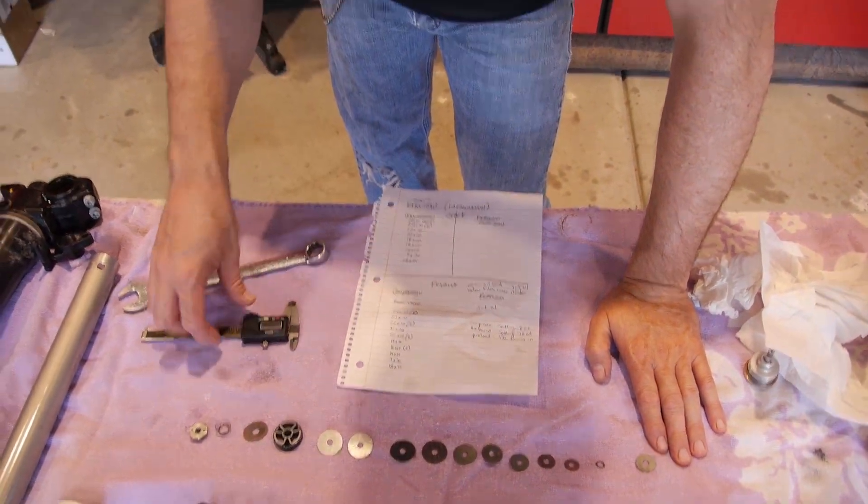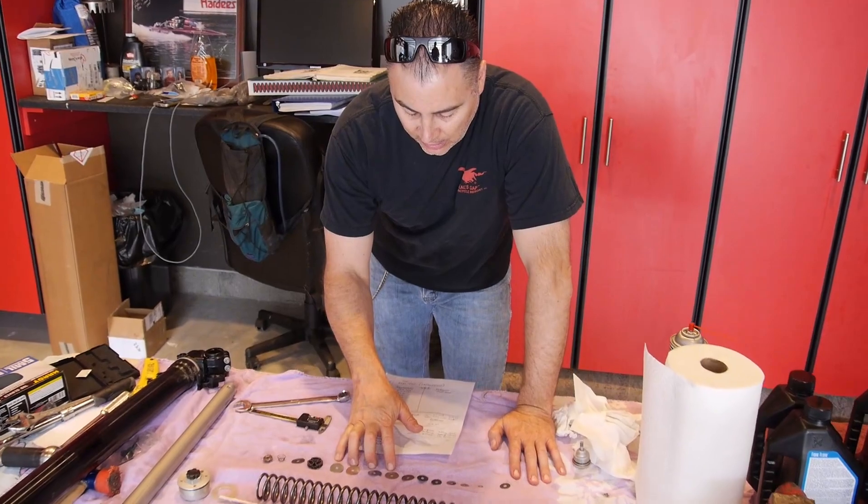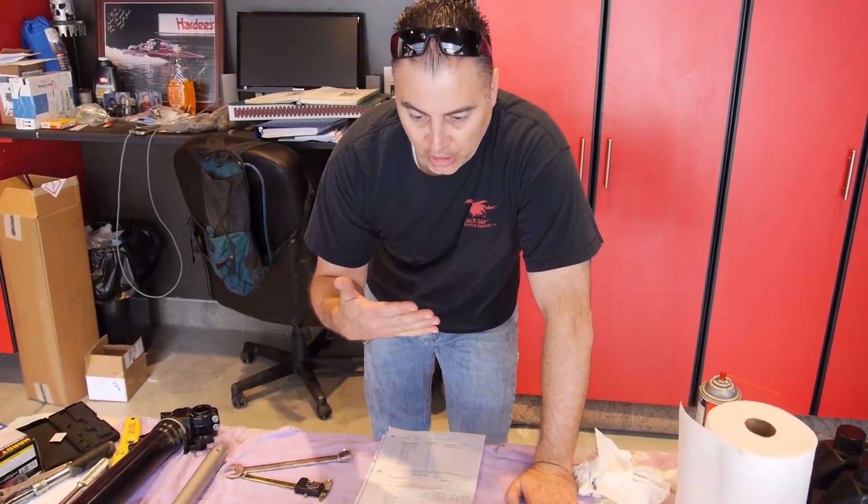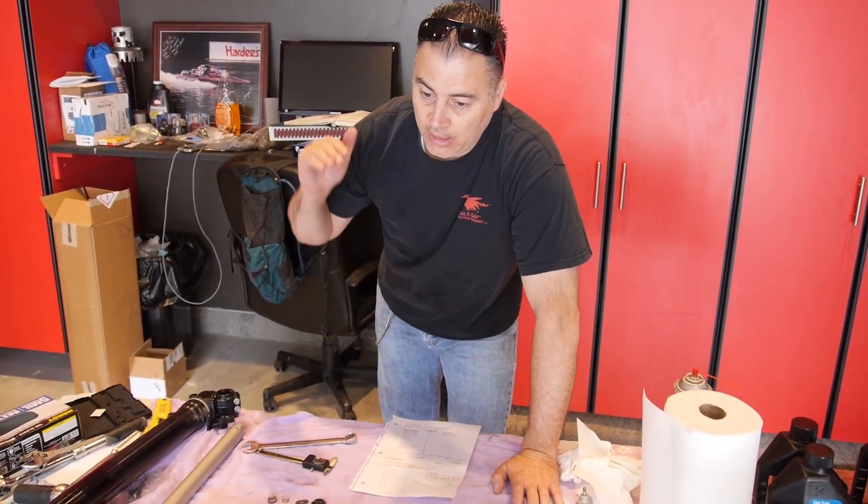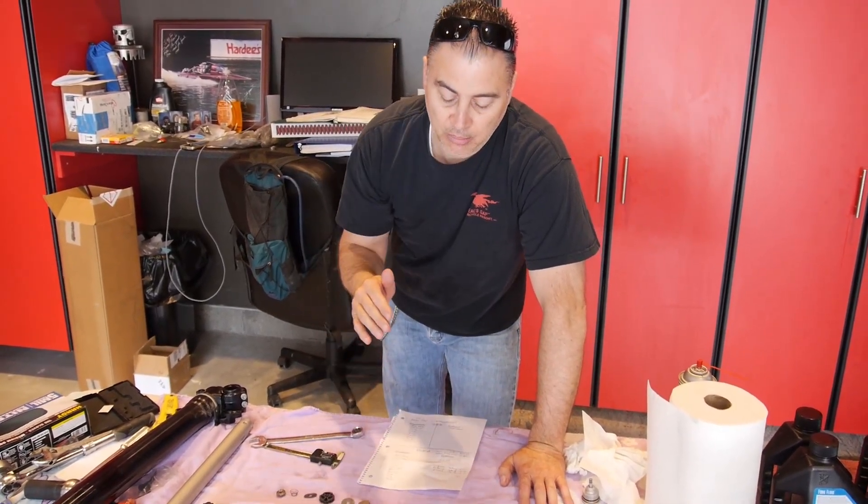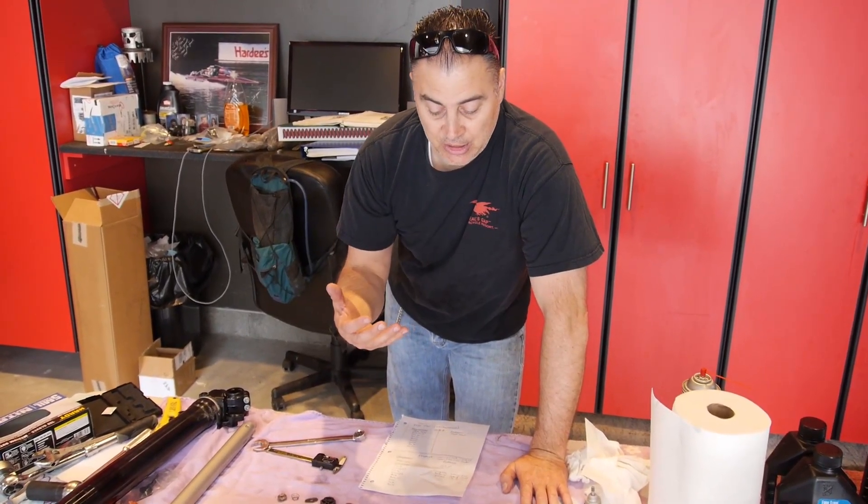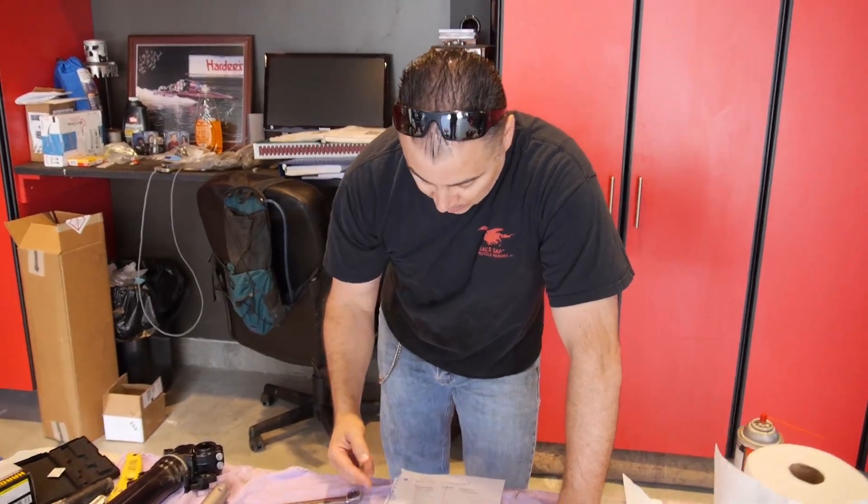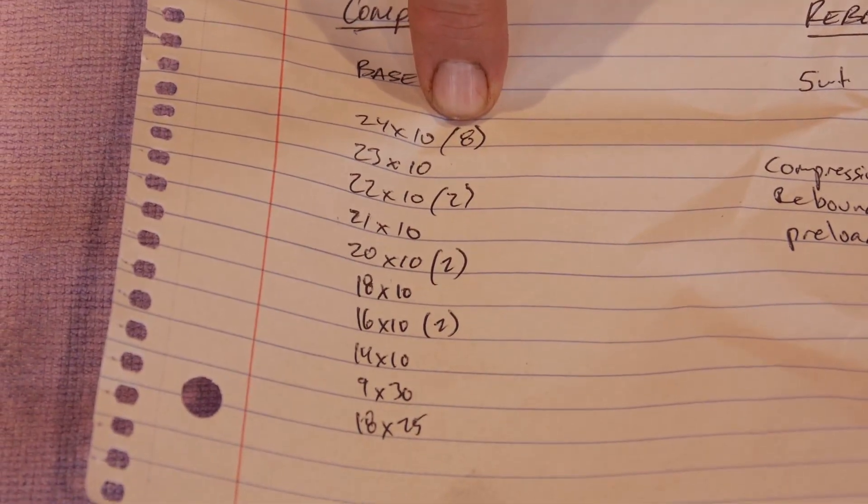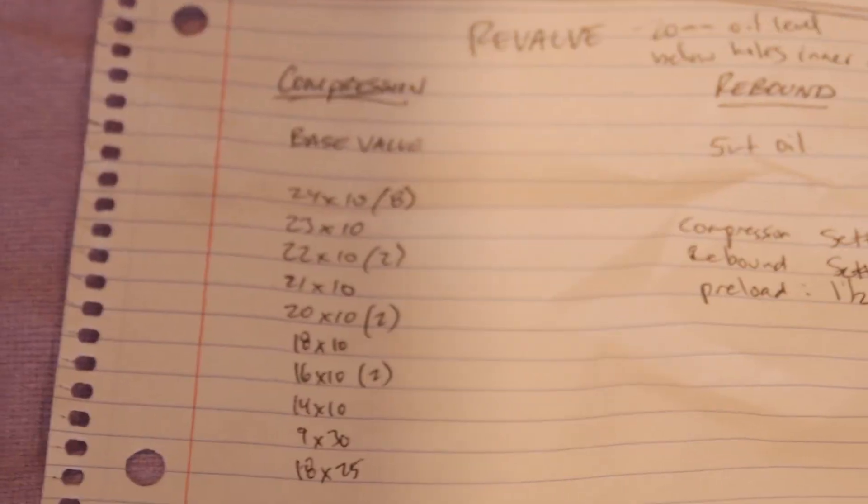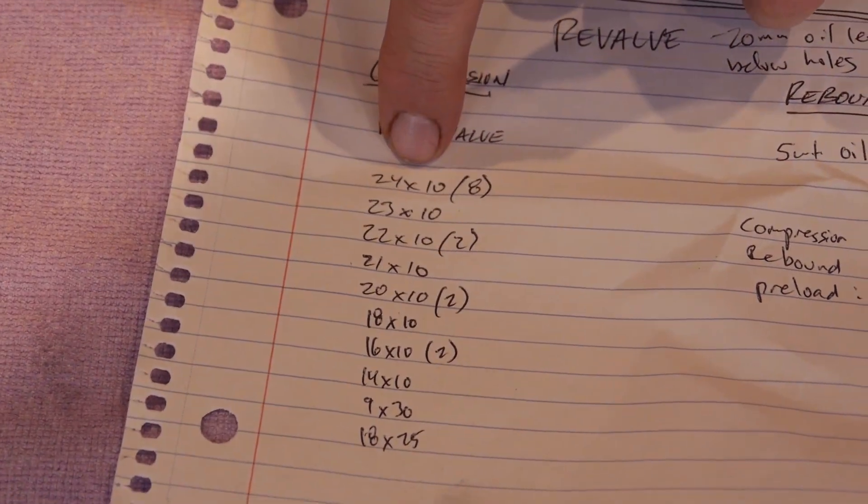So then the question comes up, what do I do now that I've got all those measured? So the low speed compression is the dampening that occurs when the fork is going at low speed. So that's going through a swale, hitting the face of a jump, landing off the jump, going through a berm, and there's a lot of fork dive that happens there. And so we wanted to stiffen that up. So if you look, what we did to change, instead of having four 24 by 10s, we increased it to eight. So we've got some extra shims here that we bought, and I had some. And we're going to add four more so that there's eight 24 by 10s.